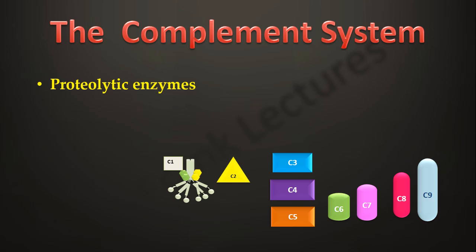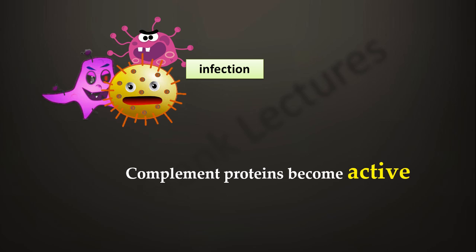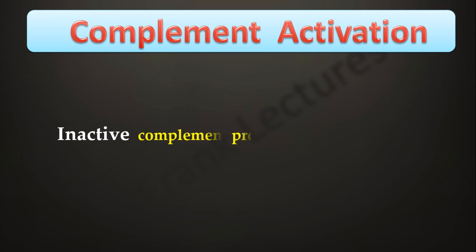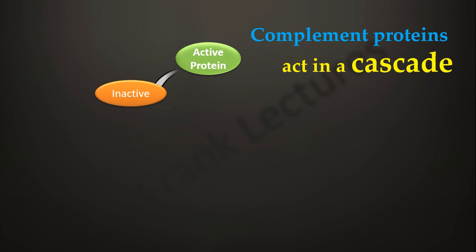Most of these proteins are proteolytic enzymes. In the absence of infection, they circulate in inactive forms. When there is an infection, these proteins become active, and this is known as complement activation — that is, when inactive proteins become active, it leads to complement activation. One important property of complement proteins is that they act in a cascade, which means one reaction stimulates another reaction, which further stimulates another, and so on.